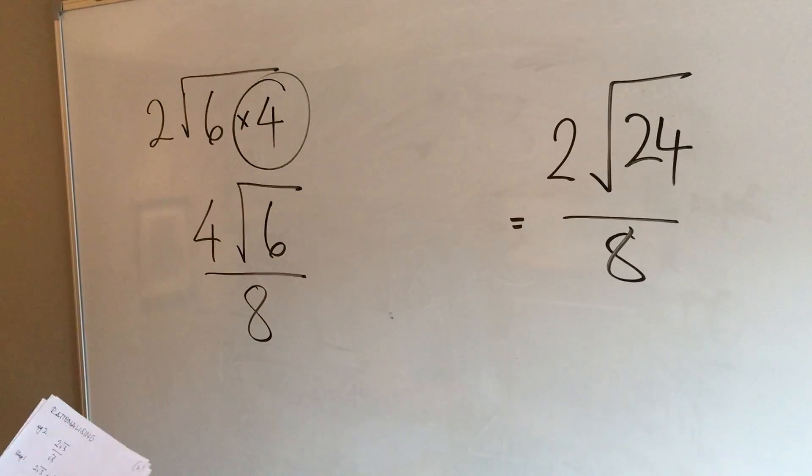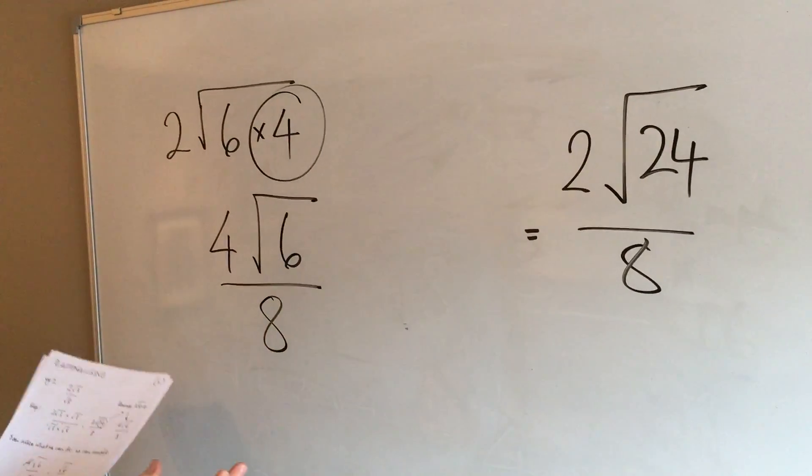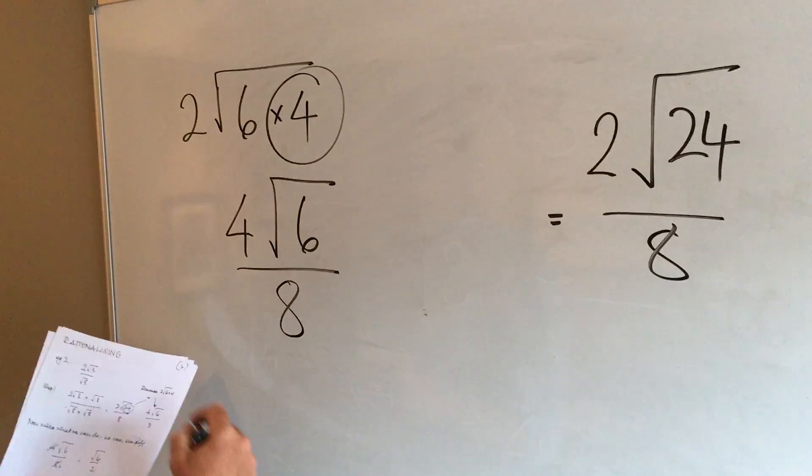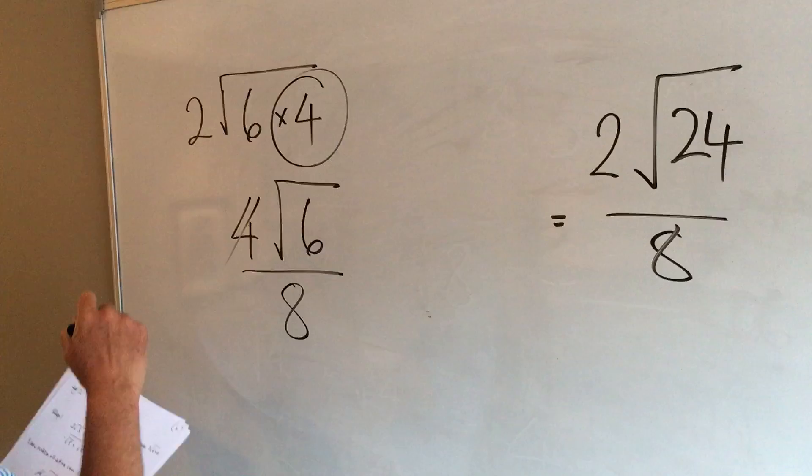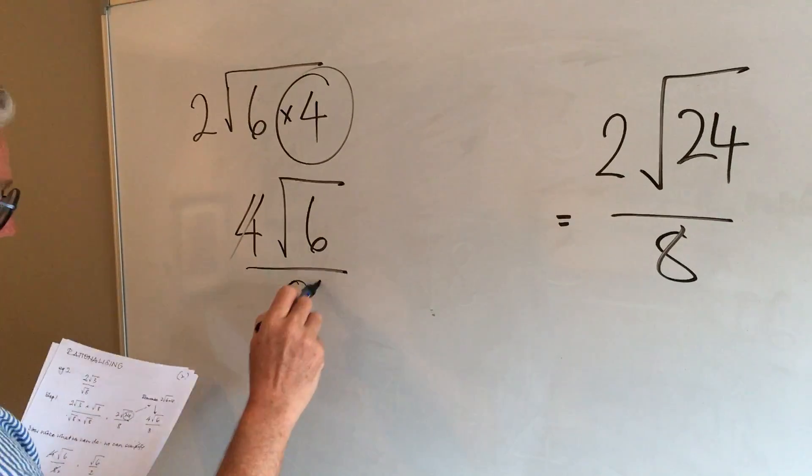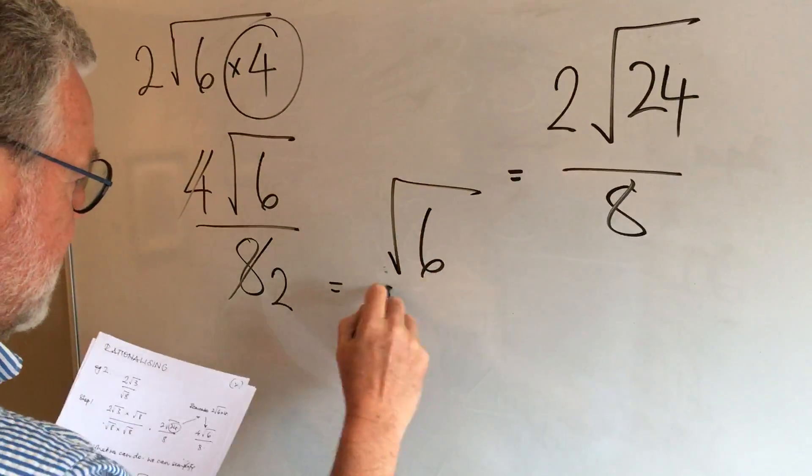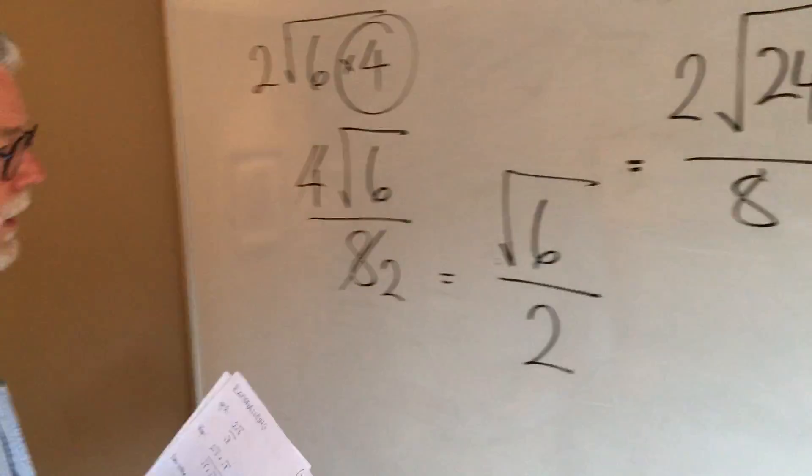Then we can do one final step in our simplification work. We can simply use our understanding of simplification to think, 4s into 4 goes 1, 4s into 8 goes 2, and so our answer simplified is root 6 over 2. And that's it.